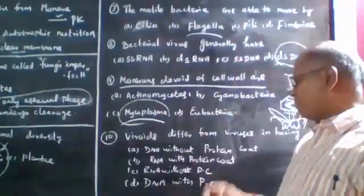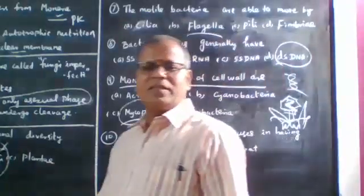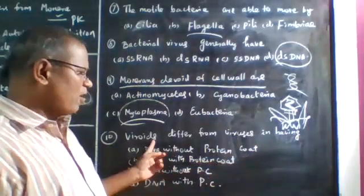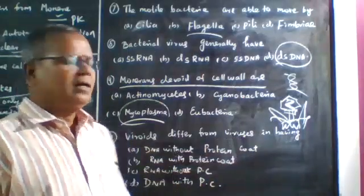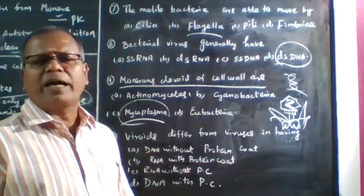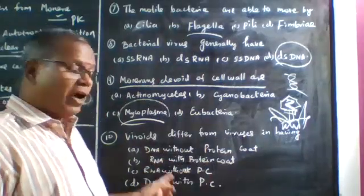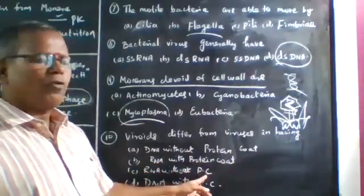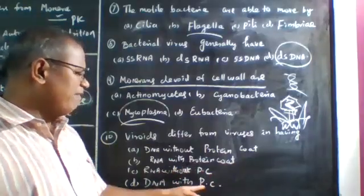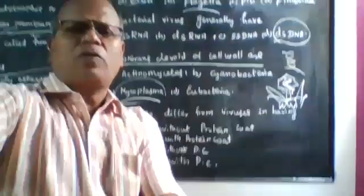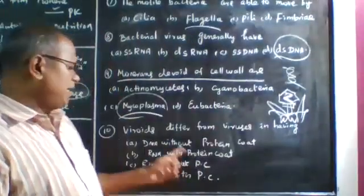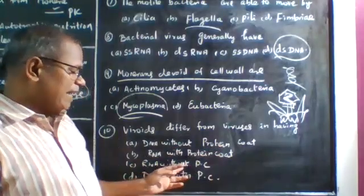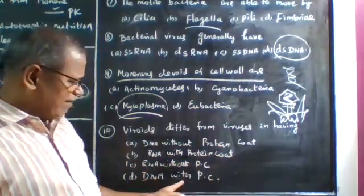Viroids differ from viruses in having which of the following? Options: DNA without protein coat, DNA with protein coat, RNA without protein coat, or RNA with protein coat. Viruses have a nucleocapsid - nucleic acid surrounded by a protein coat.